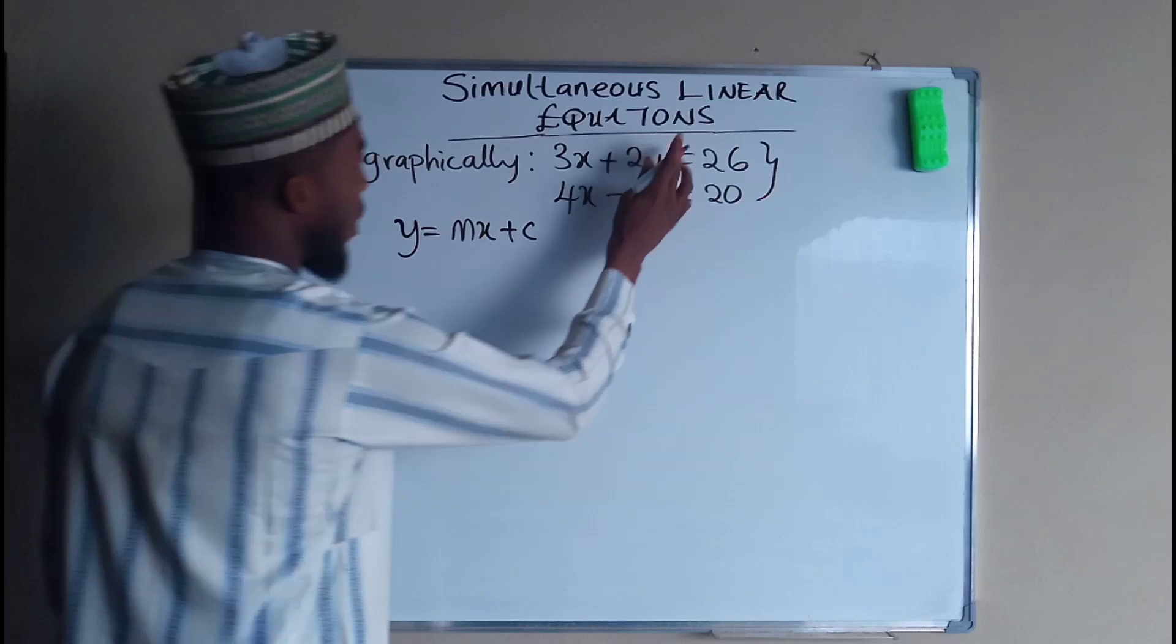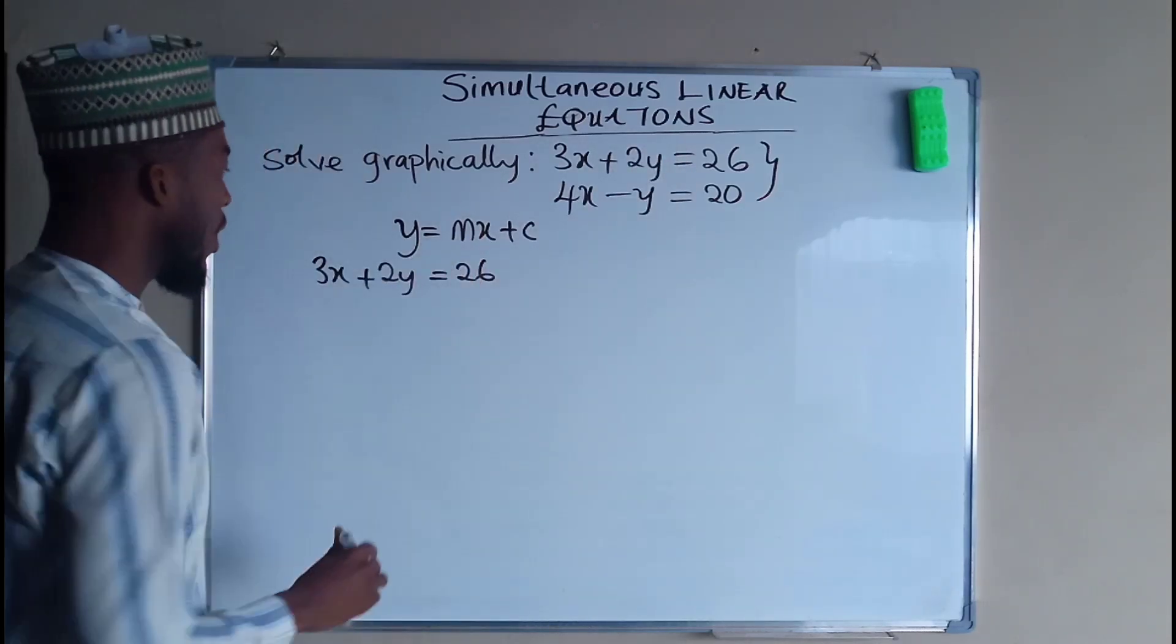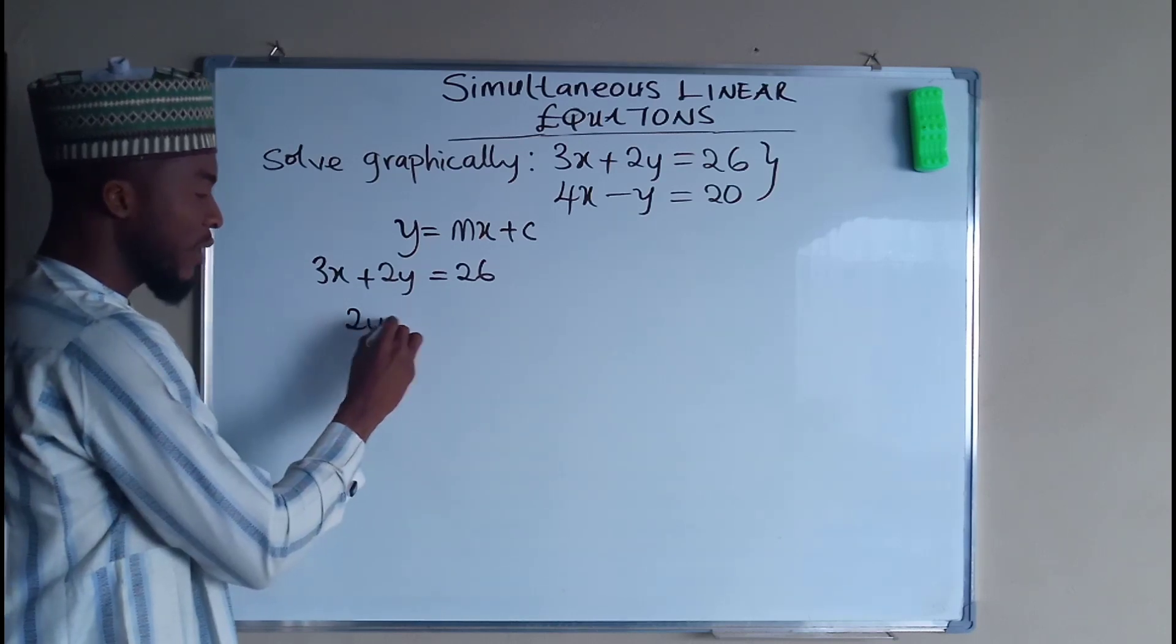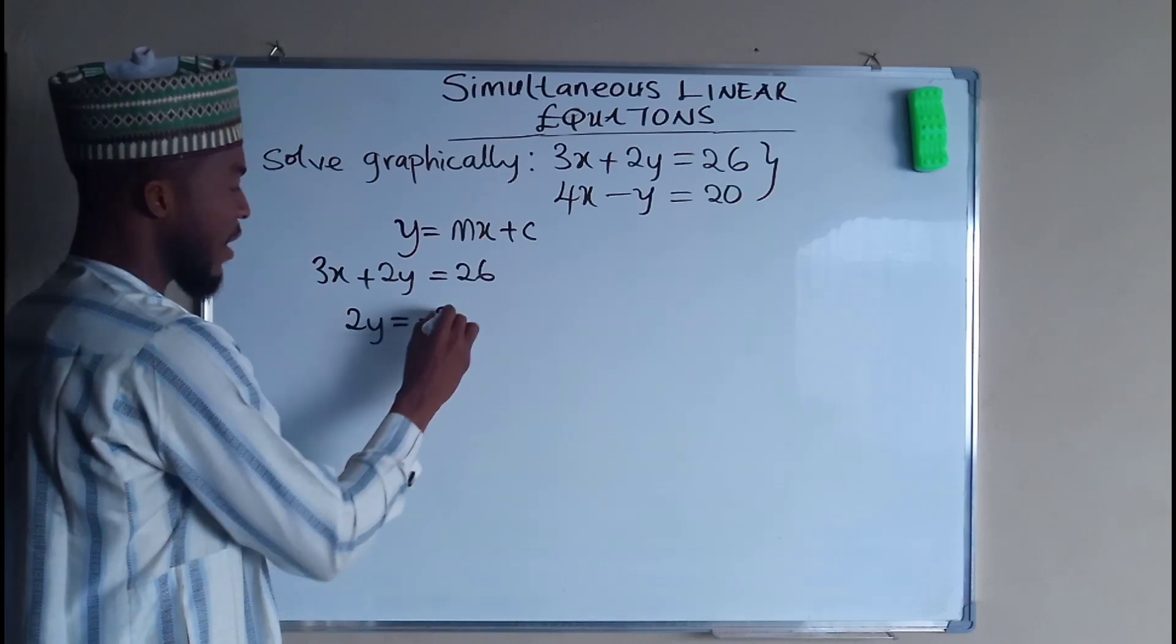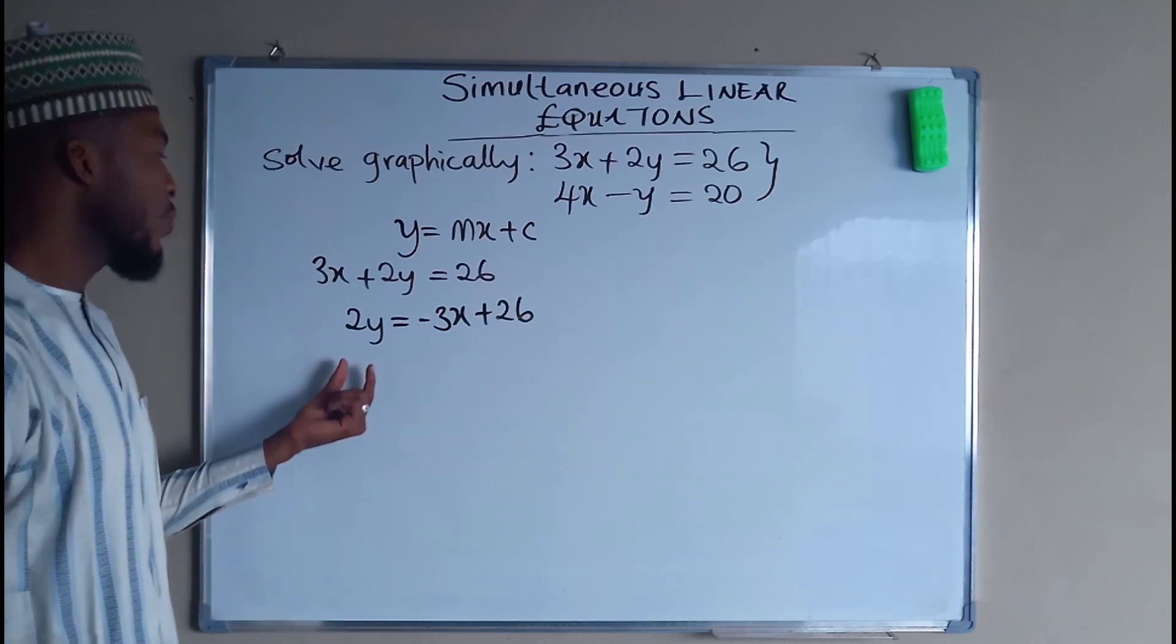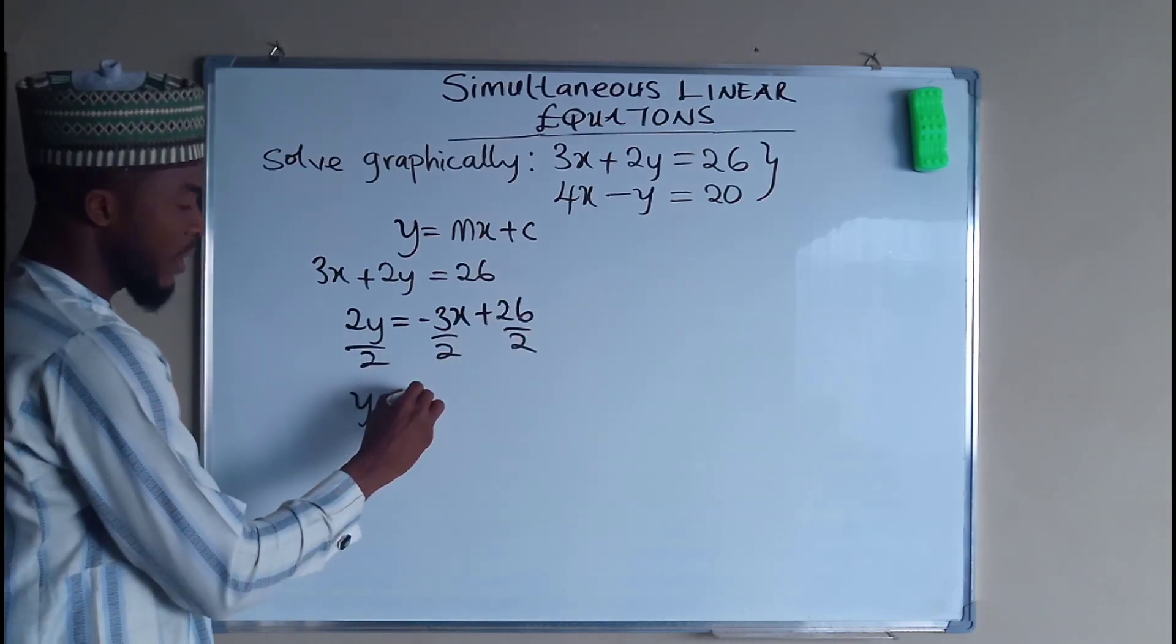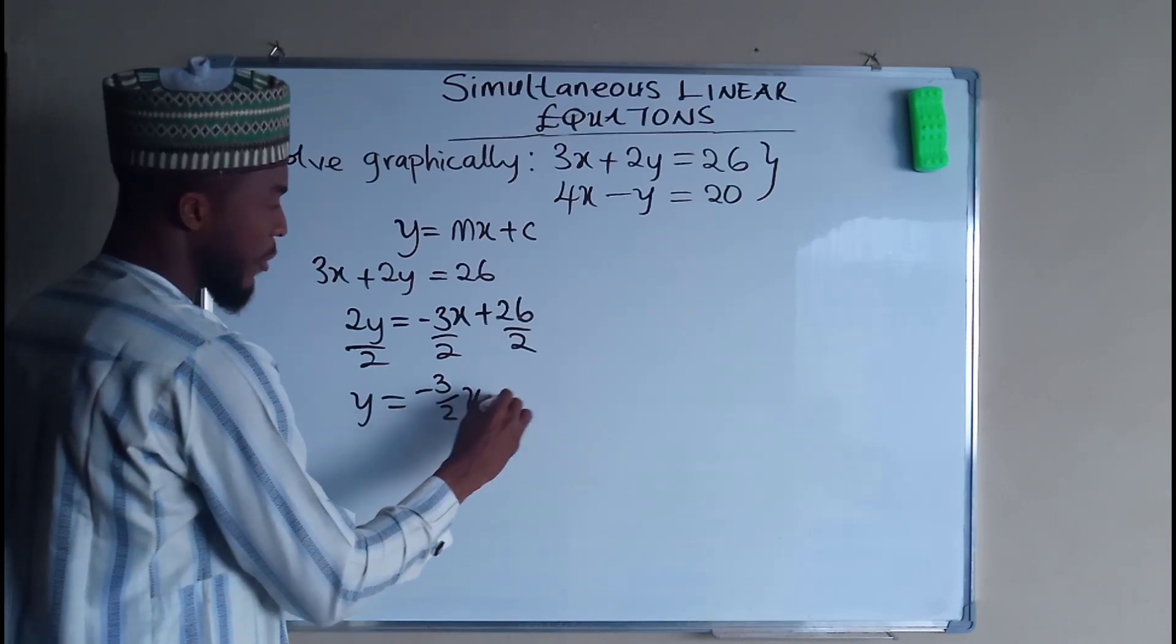So for equation 1, we need to transform it into this form. So we need to take this 3x to the right-hand side, leaving 2y there. So we have 2y on the left-hand side because when this term crosses equality sign, it turns to negative 3x. Then plus 26. Because we are interested in knowing only y, we need to divide each term by 2. So y is equal to negative 3 over 2x plus 13.